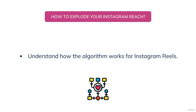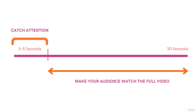The algorithm is simple — it works on watch time. What that means is you have to make your audience watch your entire 15-second, 30-second, or 60-second Reels video. As you can see on the screen, this is the timeline for a 30-second video. In order to make your audience watch your entire video, you have to catch their attention within the first three to five seconds.